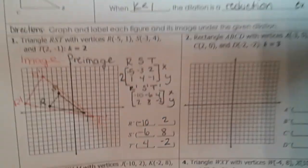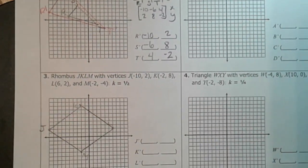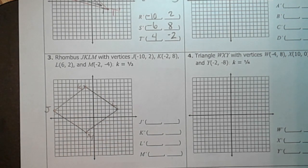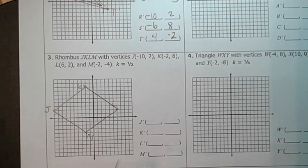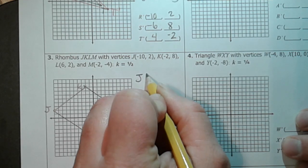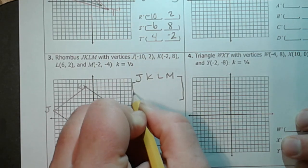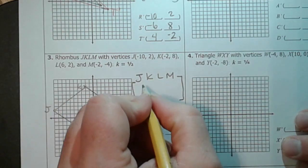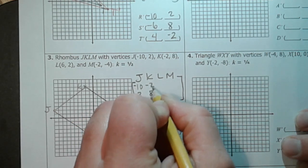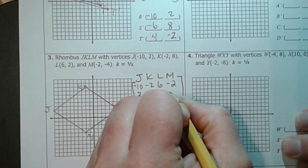All right, let's take a look at the other one. So this one's going to be a reduction. This is a rhombus. I already have it drawn here. So let's write this as a matrix with J, K, L, and M. Each of those is going to get their own column. So J is negative 10, 2. K is negative 2, 8. L is 6, 2. And M is negative 2, negative 4.